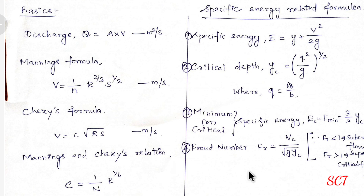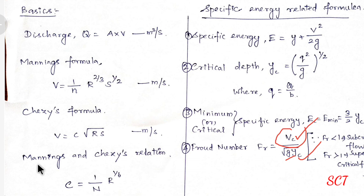Froude number Fr — very important — equal to vc divided by square root of (g times yc), where vc is critical velocity, yc is critical depth, g is gravitational acceleration. Flow classification: Fr less than 1 is sub-critical flow, Fr greater than 1 is super-critical flow, Fr equal to 1 is critical flow. These are the formulas for open channel flow. Thank you.